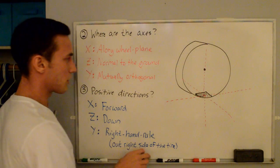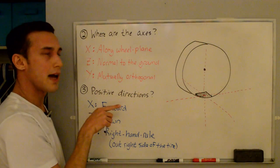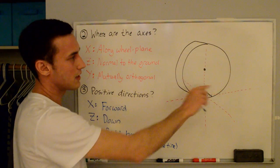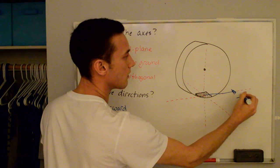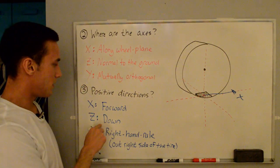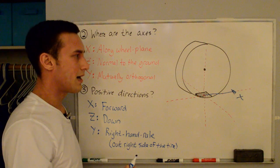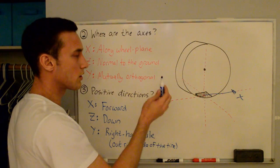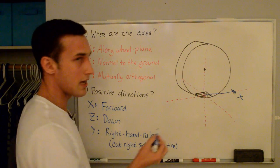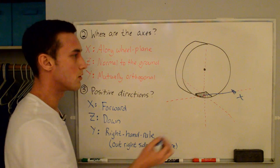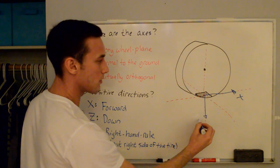Now we need to know where the positive directions are. The positive X direction is when the tire is rolling forward. The Z direction is positive downward in the SAE axis system — I think the ISO axis system has the Z reversed, and by definition the Y axis reversed as well. But I'm going with the SAE axis system for these videos, so the Z axis is positive downward.